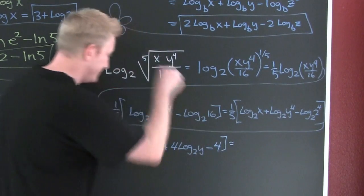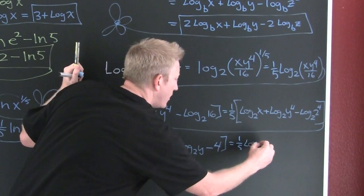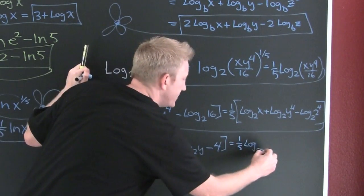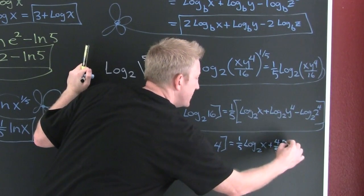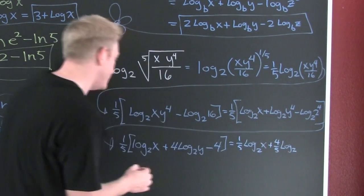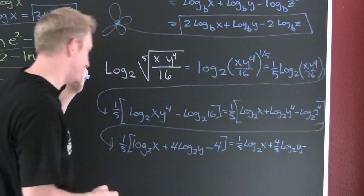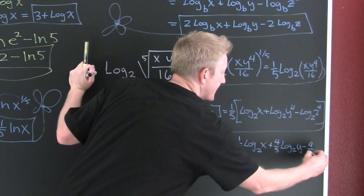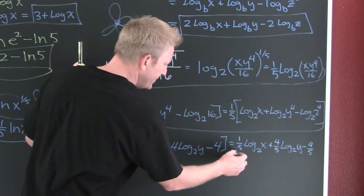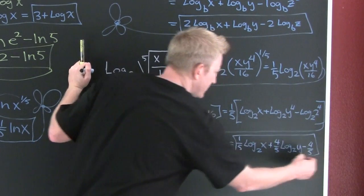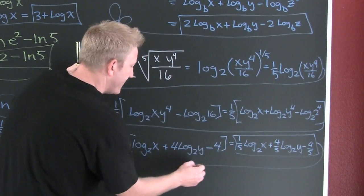So then I have 1 5th log base 2 of x plus 4 5ths log base 2 of y minus 4 5ths. And then what? A box and a firecracker. Yes.